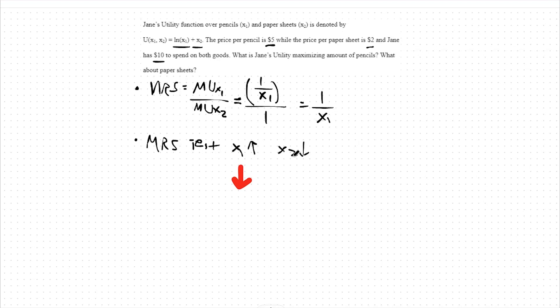As for when x2 decreases, nothing happens to this marginal rate of substitution because there's no x2 in this function. I will denote that as a horizontal line. In net, if as x1 increases, we have a decrease in our MRS, and as x2 decreases, our MRS remains constant, we then have a diminishing MRS in net.